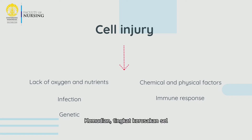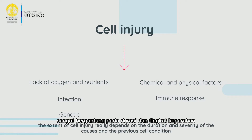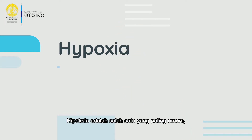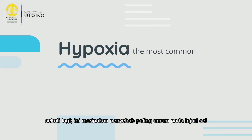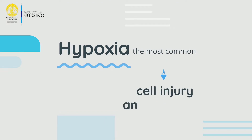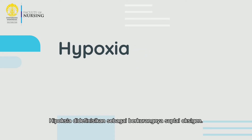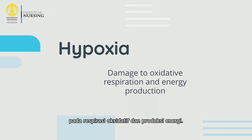The extent of cell injury really depends on the duration and severity of the causes and the previous cell condition. First of all, hypoxia — it is the most common cause of cell injury and cell death. Hypoxia is defined as reduced oxygen supply. The reduced oxygen supply causes damage to oxidative respiration and energy production.